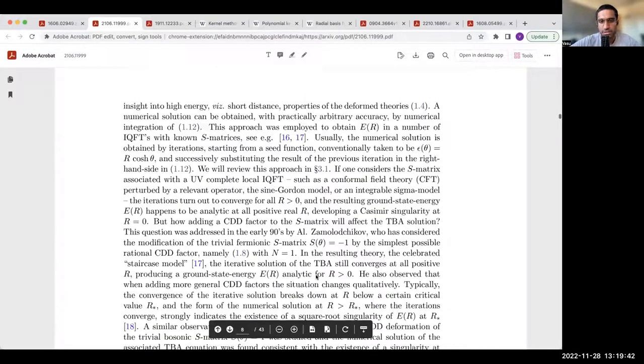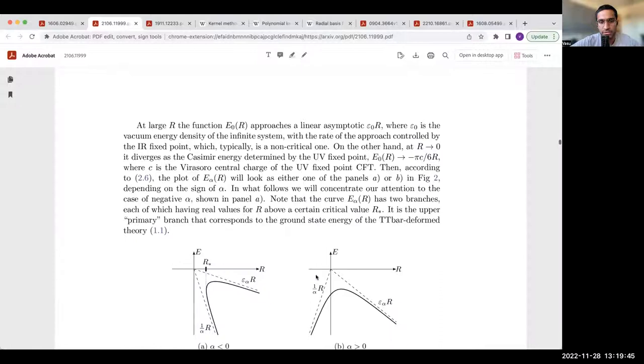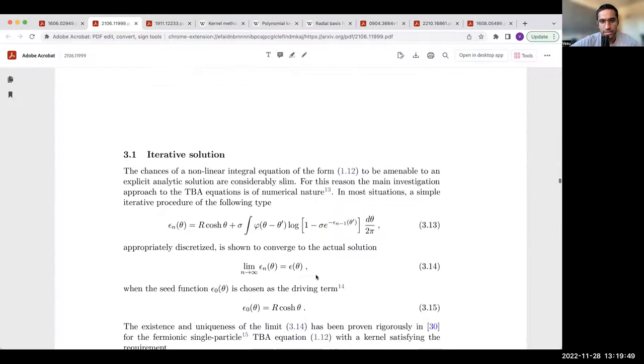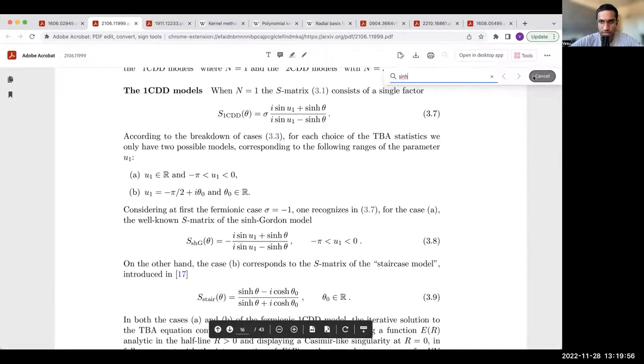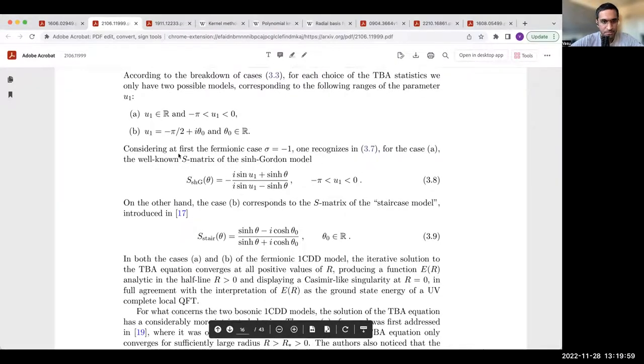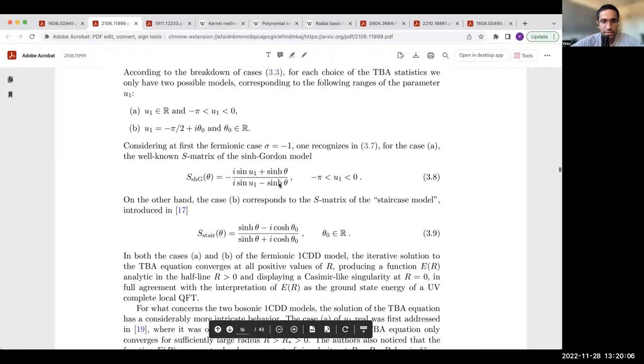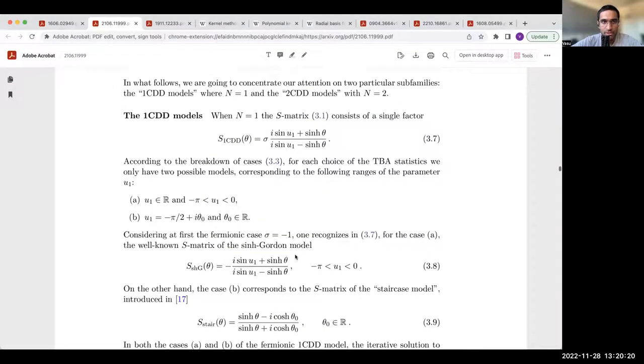What they look at are cases where we have a pure pole formula. This is actually interesting because you get very interesting results. These one CDD models are a great example. If you start with the fermionic case, what you get is the sinh-Gordon model or the staircase model, which are realized as these one CDD models. This is a very fun way in which you can actually generate many of these S-matrices of specific integrable field theories by iteratively doing the generalized tt-bar deformation of a free theory.